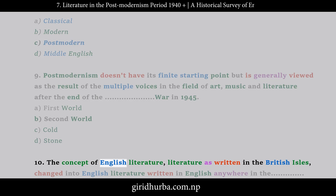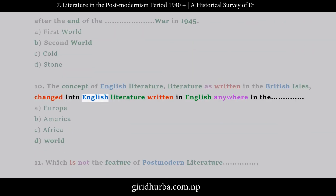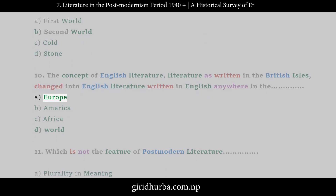Question 10: The concept of English literature — literature as written in the British Isles — changed into English literature written in English anywhere in the: A. Europe. B. America. C. Africa. D. World.